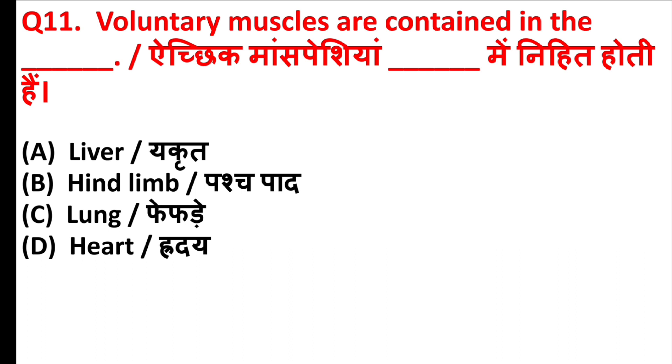Voluntary muscles are contained in which of the following? The right answer is option B: Hind limb.